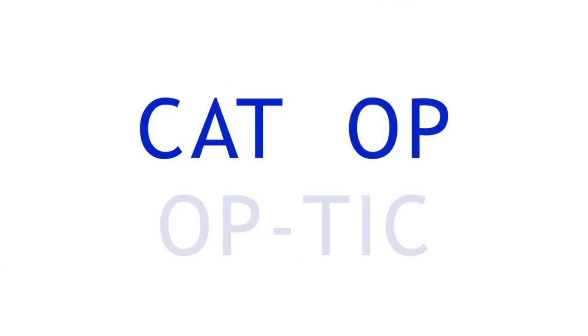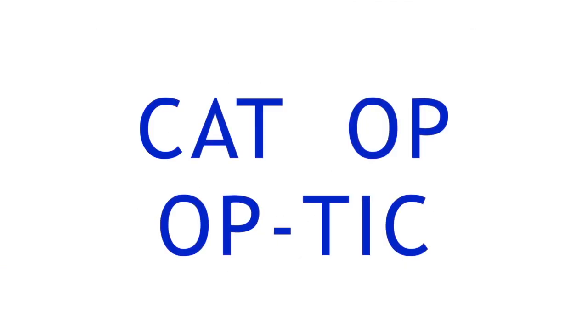We'll start with short vowels. Words and syllables ending in a consonant have their short vowel sound. For example, 'op' is a syllable pronounced with a short O, as in 'optic.' Here are some more syllables: am, em, im, om.